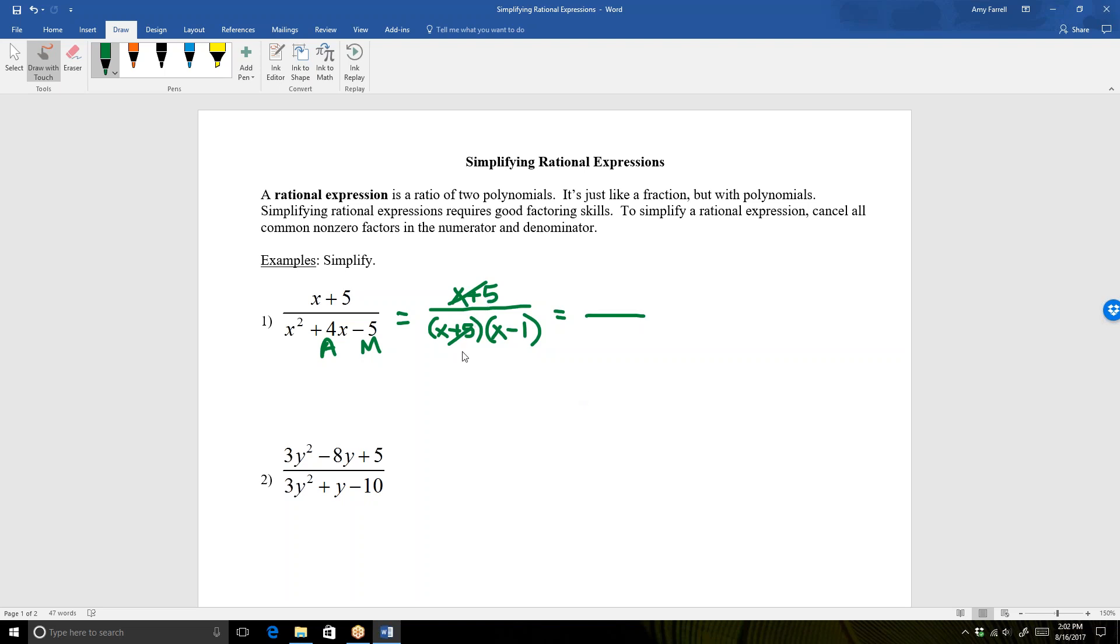We have a common factor of x plus 5 in the numerator and denominator. So therefore, I'm going to cancel that common factor. Since I have nothing left in the numerator, I have a 1 there. And in the denominator, we have x minus 1. So this is our final answer. There's nothing more I can do to simplify that. I can't cancel the ones. That would be canceling terms, not factors. So I'm done. My answer is 1 over x minus 1.